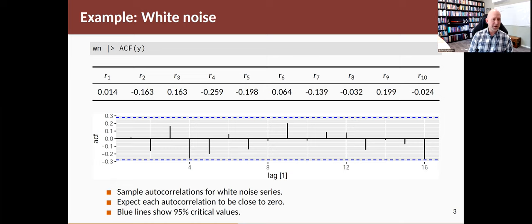5% of the time, even with white noise data, you will get a spike outside those limits. But 95% of the time, it should stay within the limits.